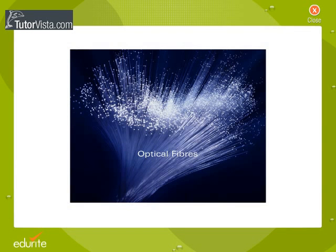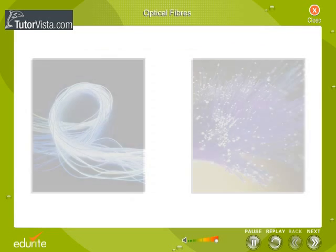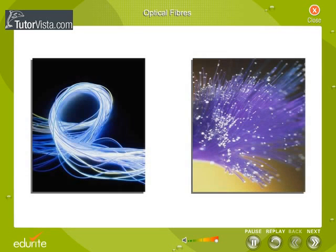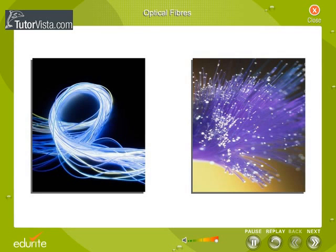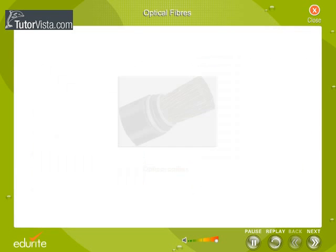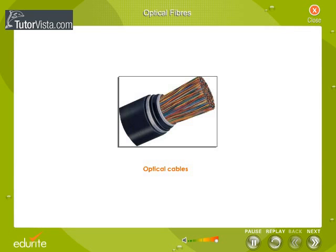Optical fibers are long thin strands of very pure glass about the diameter of a human hair. They are arranged in bundles called optical cables and are used to transmit light signals over long distances.